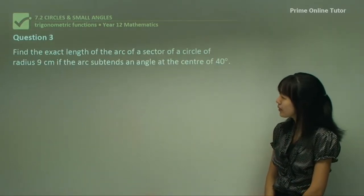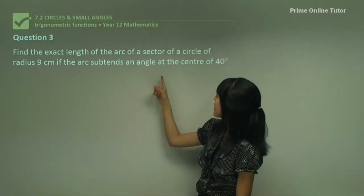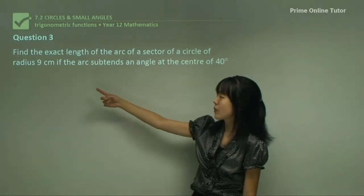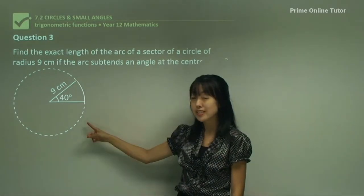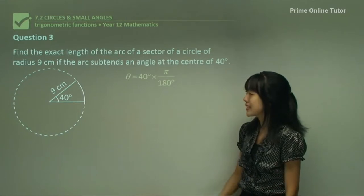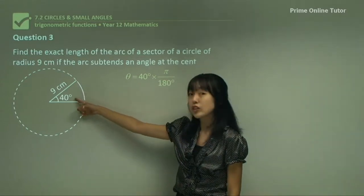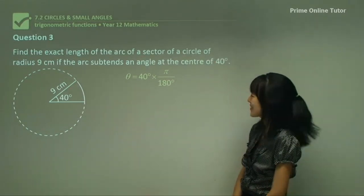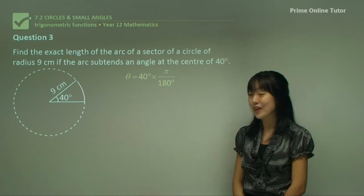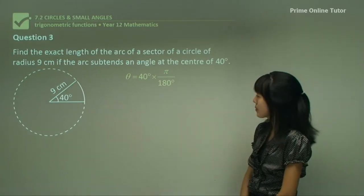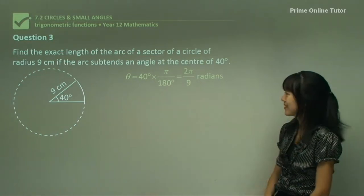Question 3 — finding the exact length again. They've given us a radius of 9 and an angle at the centre of 40 degrees. Remember, L equals R theta but theta must be in radians. Since they've given us degrees, we have to convert. Using the degrees-to-radians conversion, simplify and you get 40 degrees converting to 2π/9 radians.